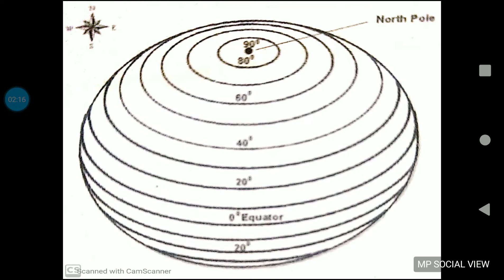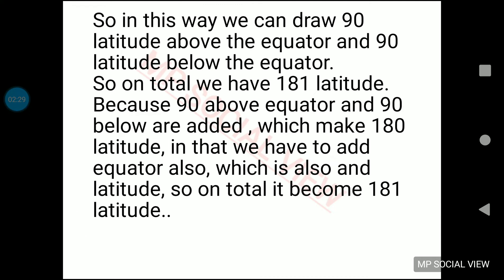We are showing you very few latitudes here, but you have to imagine that above the equator there are 90 latitudes and below the equator there are 90 latitudes. So we draw 90 latitudes above the equator and 90 latitudes below the equator, and the total number of latitudes comes to 181. Many people say it is 180, because 90 above and 90 below equals 180, but the equator is also a latitude, so you have to add it as well. In the examination, if they give you both 180 and 181 as options, you must choose 181, because that is the correct number of latitudes on earth.